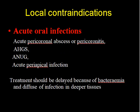Acute oral infections such as acute pericoronitis, acute herpetic gingivostomatitis, acute necrotizing ulcerative gingivitis, and acute periapical infection also contraindicate extraction. Treatment should be delayed because of bacteremia and the risk of spread of infection to deeper tissues. With this, we complete the topic of contraindications of tooth extraction.